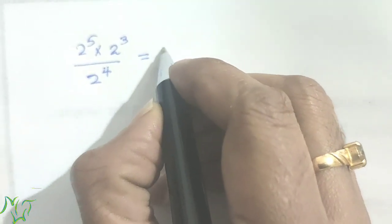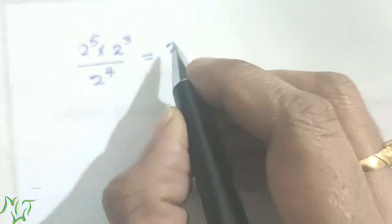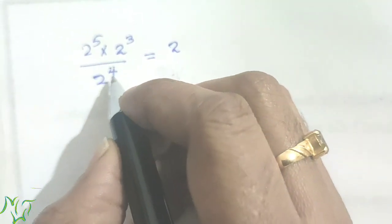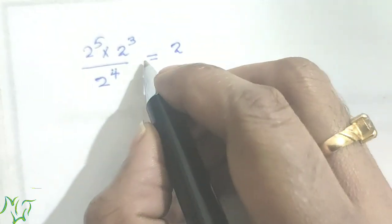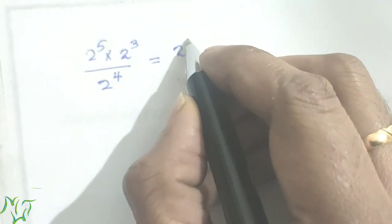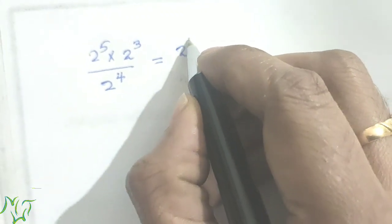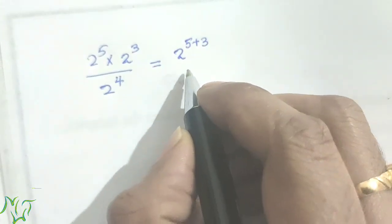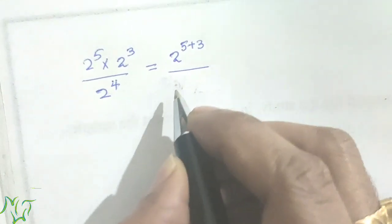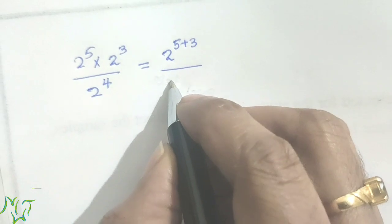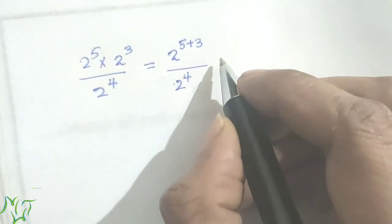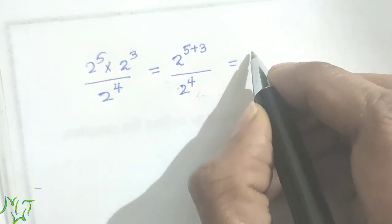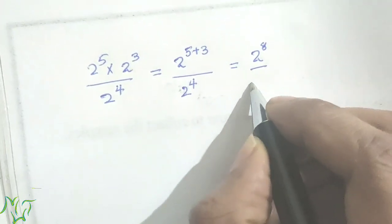All the bases are the same, so first in the numerator we can use the multiplication rule: x raised to m plus n. So we can write 2 raised to 5 plus 3, divided by 2 raised to 4. Then we add: 2 raised to 5 plus 3 is 2 raised to 8, by 2 raised to 4.